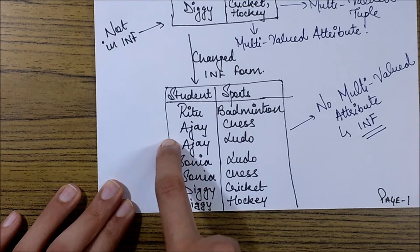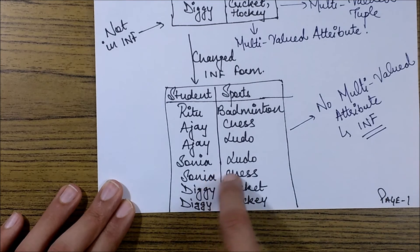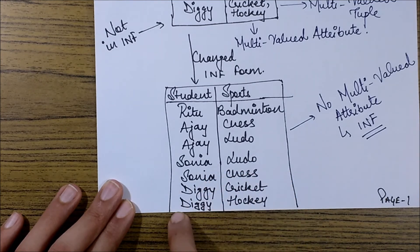So Ritu plays badminton, Ajay plays chess, Ajay plays Ludo as well. Sonia plays Ludo, Sonia plays chess, Diggy plays cricket, Diggy plays hockey.